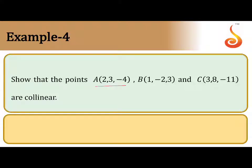Show that the points A(2,3,-4), B(1,-2,3), and C(3,8,-11) are collinear.